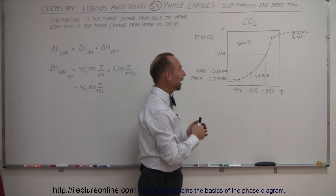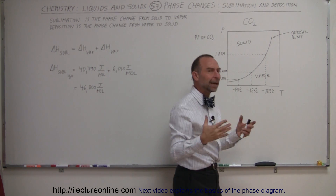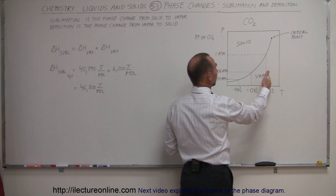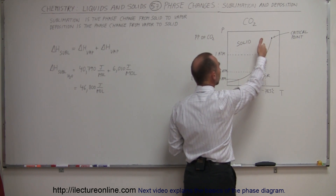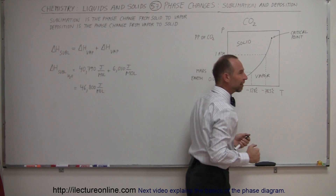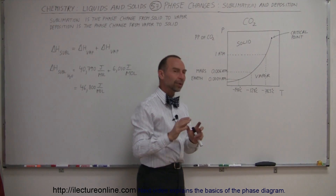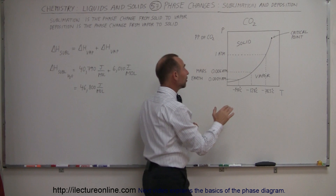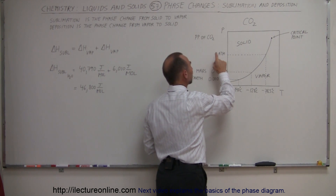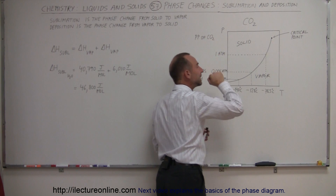Notice that at one atmosphere — the atmospheric pressure of Earth — vapor carbon dioxide will turn into solid carbon dioxide if the temperature drops below minus 78.5 degrees centigrade. But that's a little bit misleading, because it doesn't depend on the total atmospheric pressure — it depends on the partial pressure of carbon dioxide in the atmosphere.